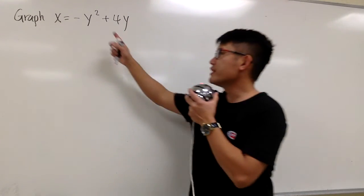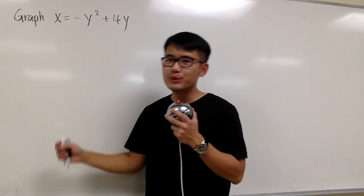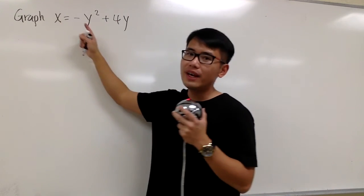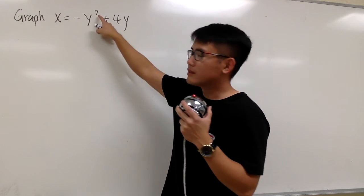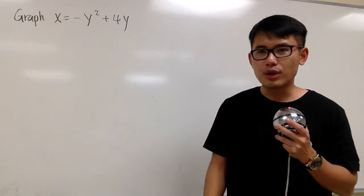Okay, we are going to graph this equation: x equals negative y squared plus 4y. As we can see, we have the x by itself, and we have this y raised to the second power. Therefore, the graph is going to be a sideways parabola.